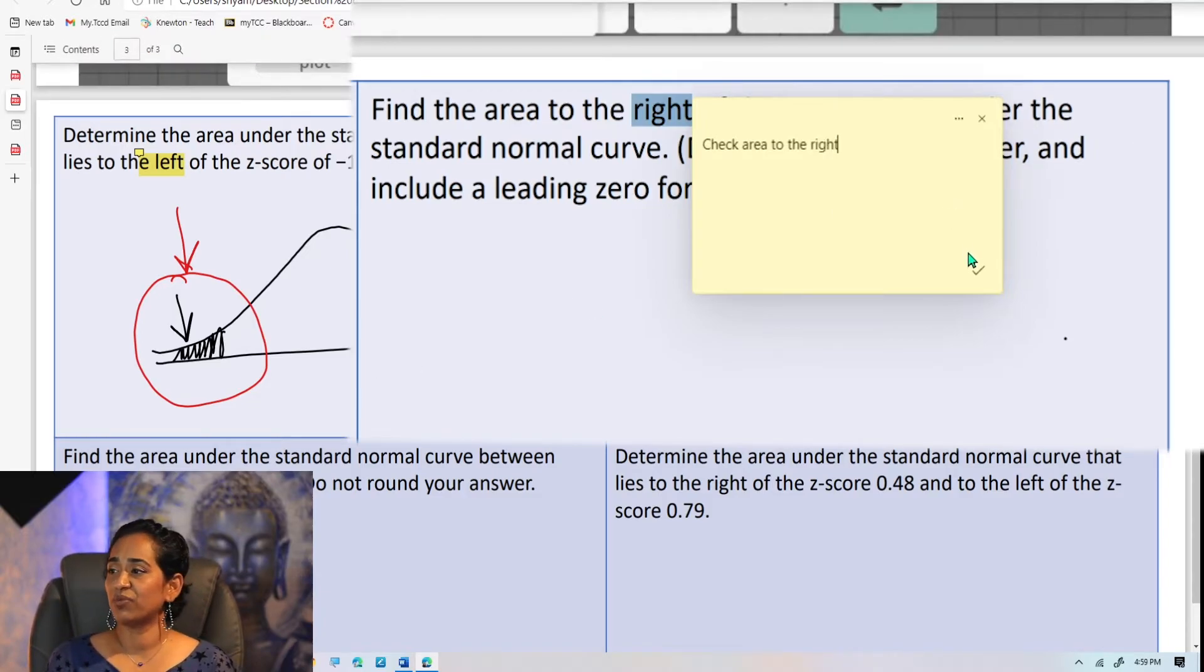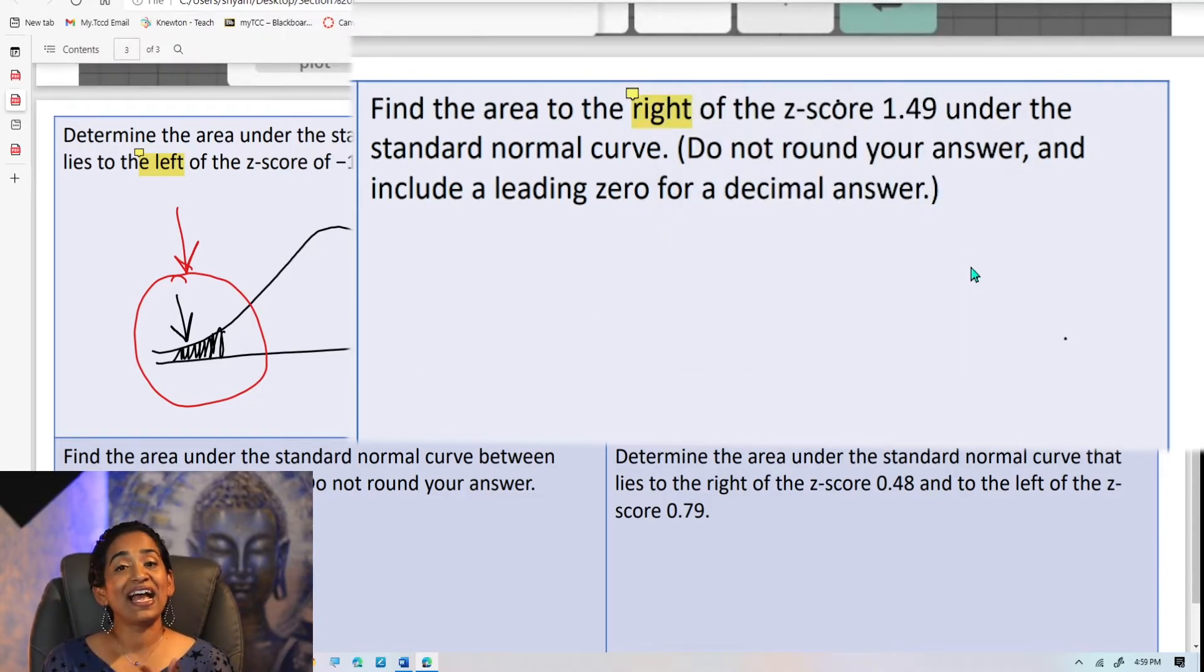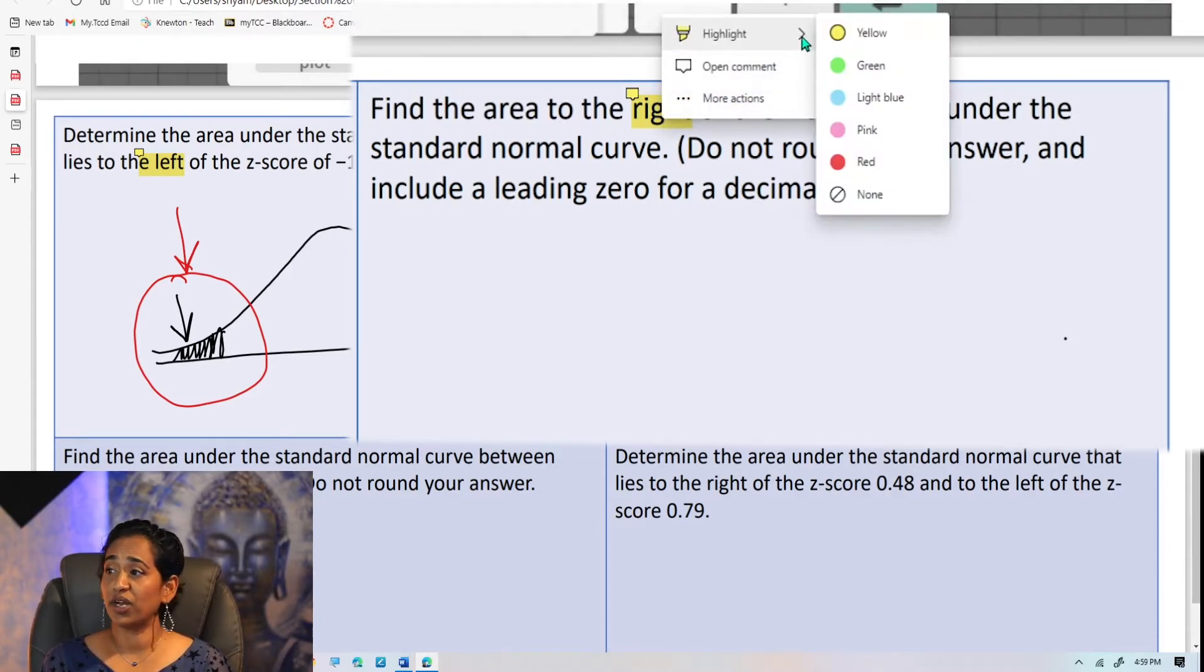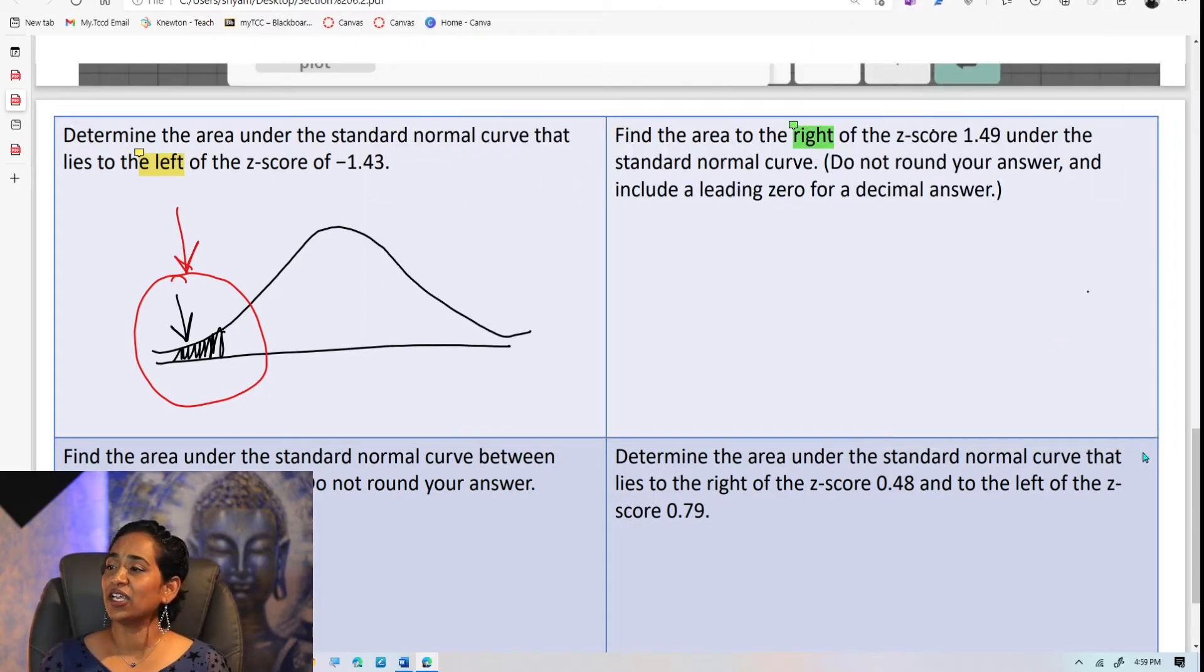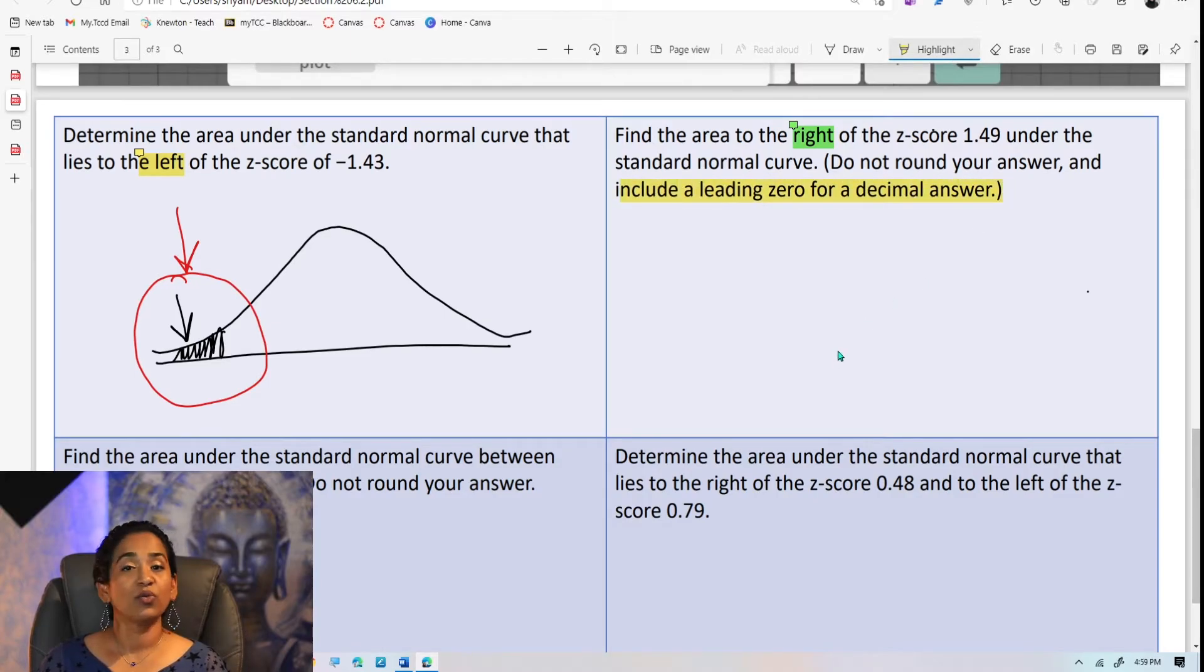Now, if I want them to check area to the right, I'm simply going to highlight the word right, add a comment, check area to the right. Again, this is just for demonstration purposes. You can add whatever comments you want. Now, let me go back here. I can change the color of my highlight too. If left is yellow, I want to make right a green. So there I have it. And in addition to that, I can also use my pen tool and highlight whatever I want. And if I'm done, I can go ahead and erase it.